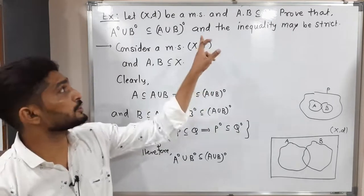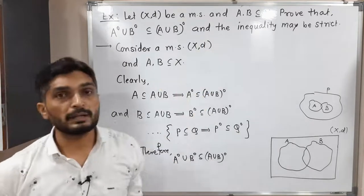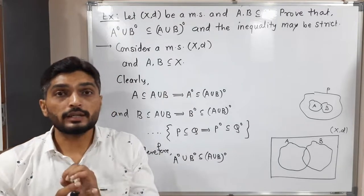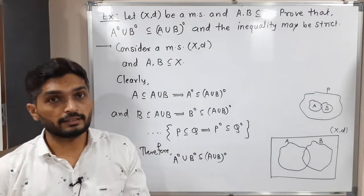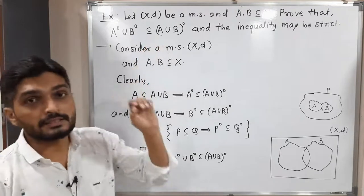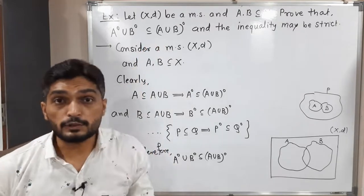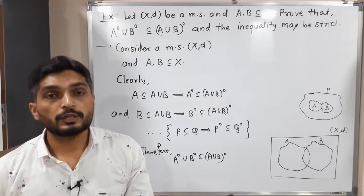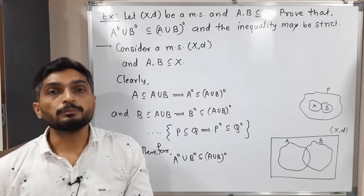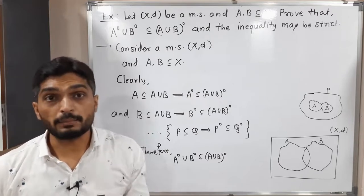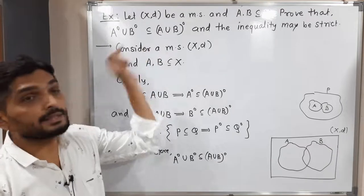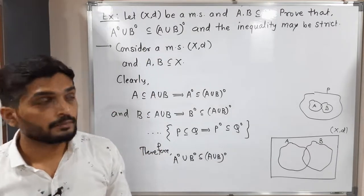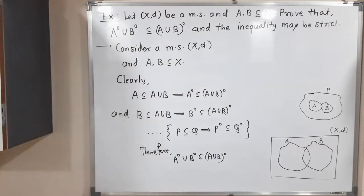Next, we have to prove that the inequality may be strict — that is, it is not necessary to have equality here. So in some examples we will have a proper subset, not equality. We will find one example in which there is no equality.